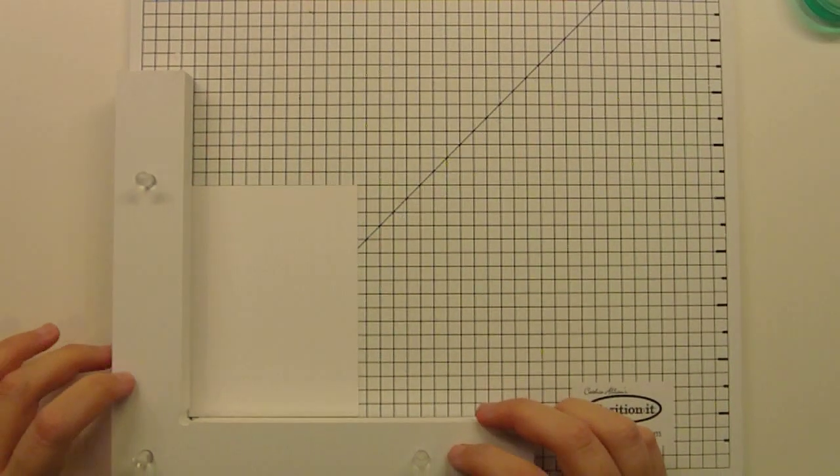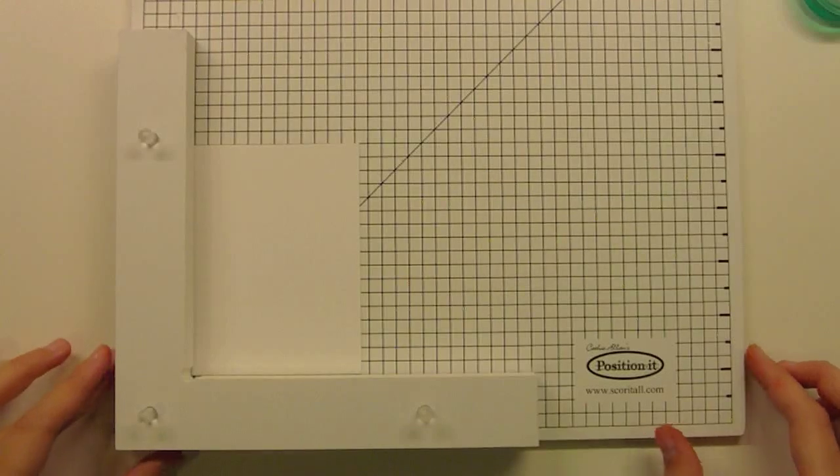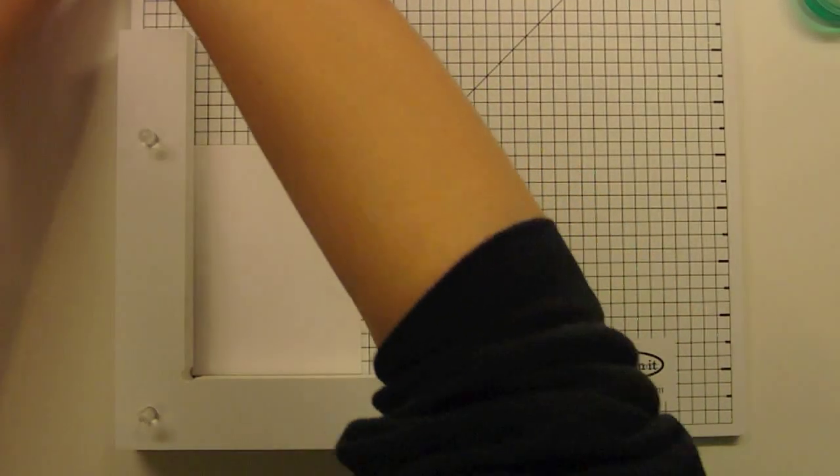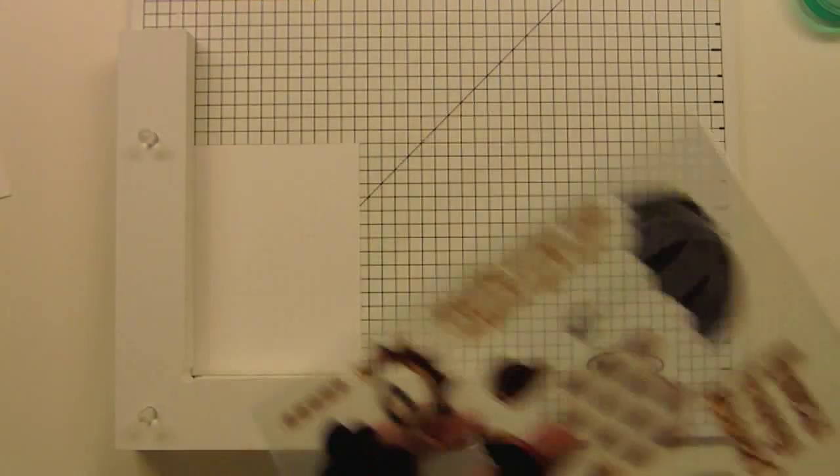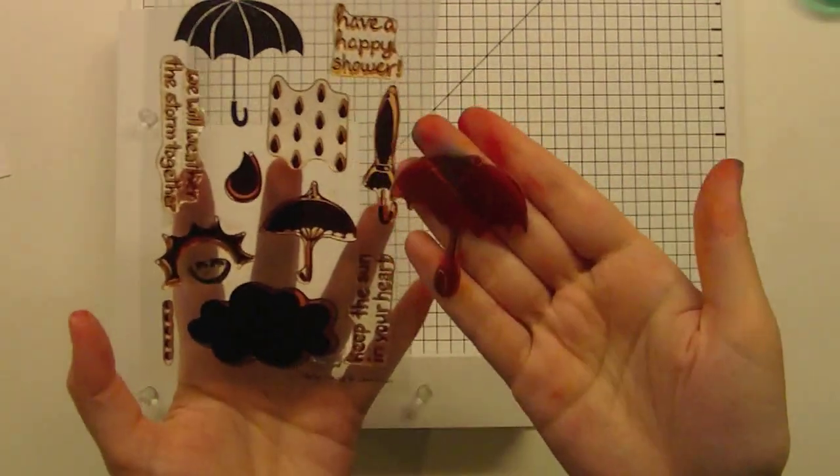And the technique we're going to do today is kind of like an ombre style, like tie-dye kind of, but just one shade. I know I'm saying that word incorrectly, but it's O-M-B-R-E with an accent in French. If anybody speaks French, let me know.